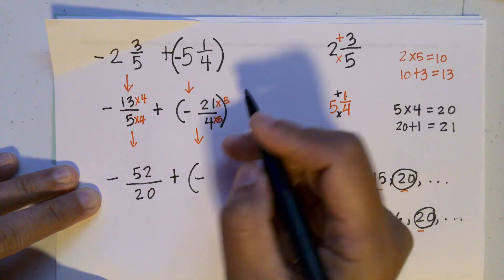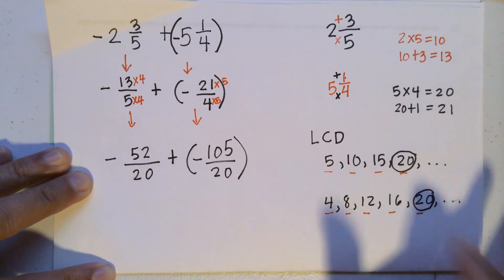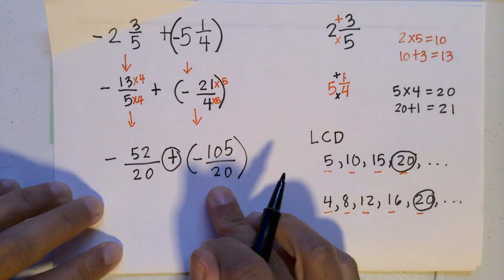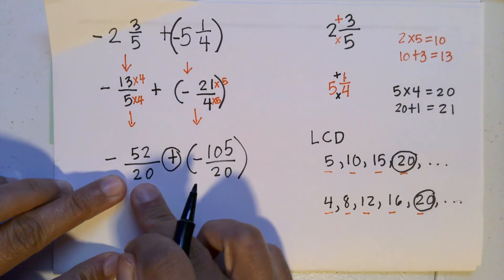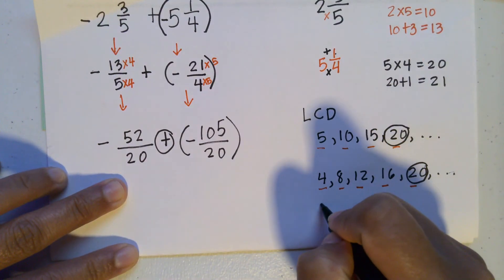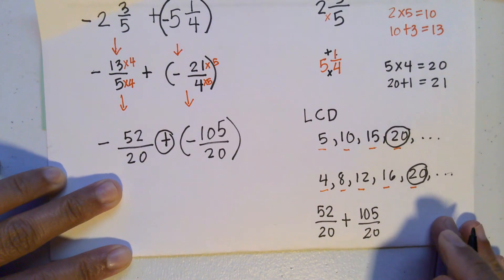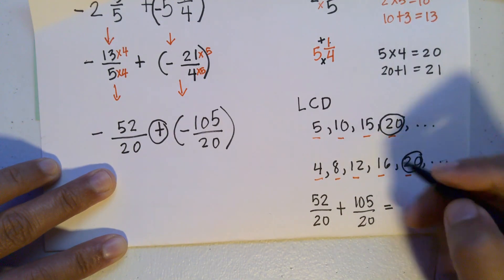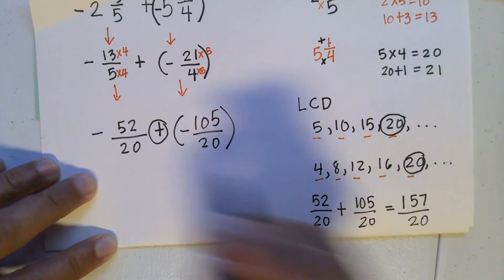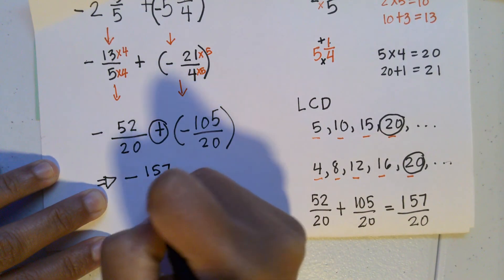So we have negative fifty-two over twenty plus negative one hundred five over twenty. Since we are adding two negatives, just like with integers, when the signs are the same we add the absolute values. The absolute value of fifty-two over twenty plus the absolute value of one hundred five over twenty gives fifty-two plus one hundred five over twenty, which equals one hundred fifty-seven over twenty. We then copy the common negative sign, giving negative one hundred fifty-seven over twenty.